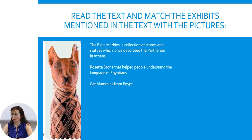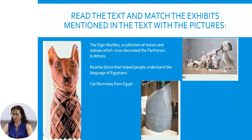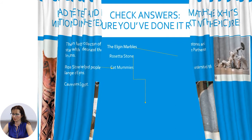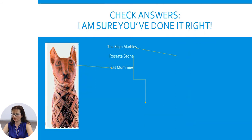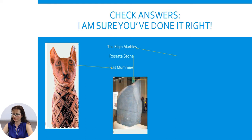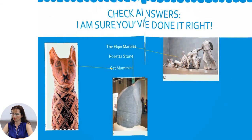Now, read the text again independently and match the exhibits mentioned in the text with a picture: the Elgin Marbles — a collection of stones and statues which once decorated the Parthenon in Athens; the Rosetta Stone, which helped people understand the language of Egyptians; and cat mummies from Egypt. Pause the slide and then check yourself. The answers: the first picture — cat mummies; the next picture — Rosetta Stone; and the last picture — the Elgin Marbles.